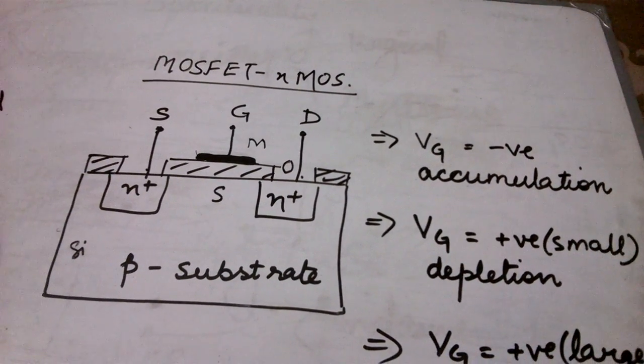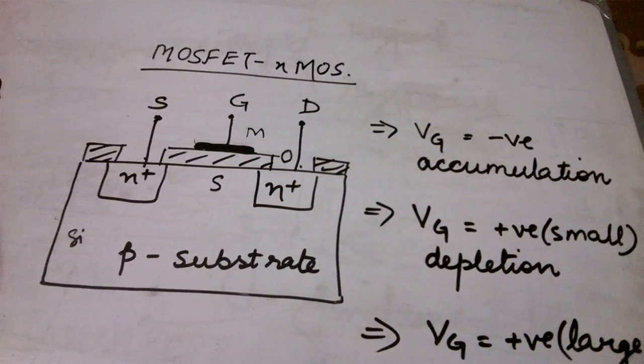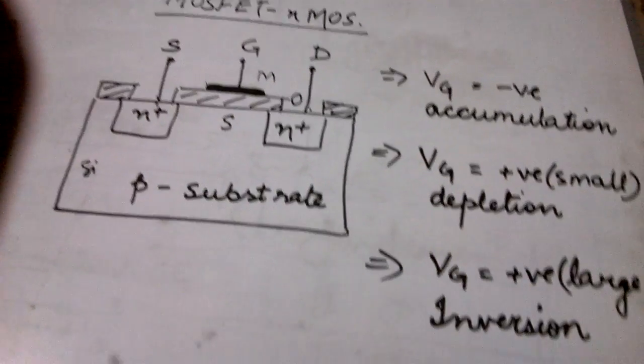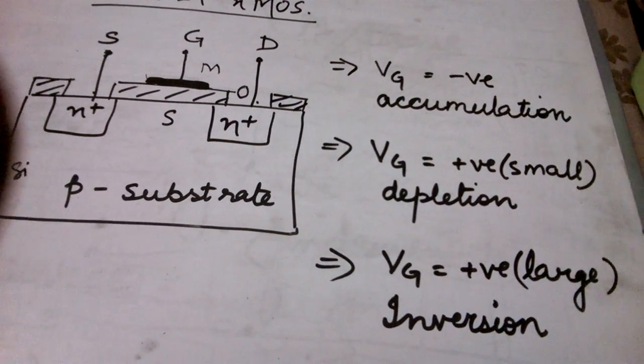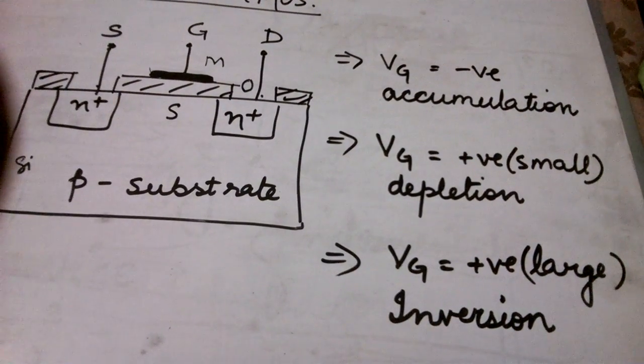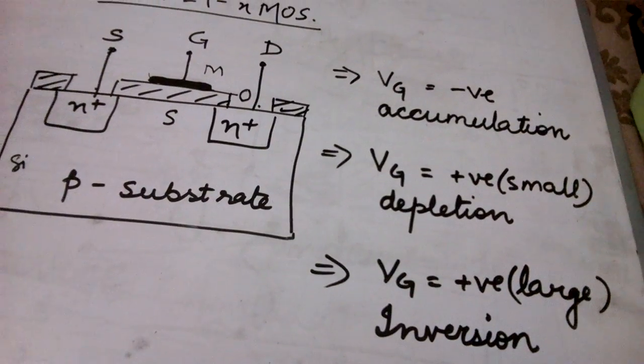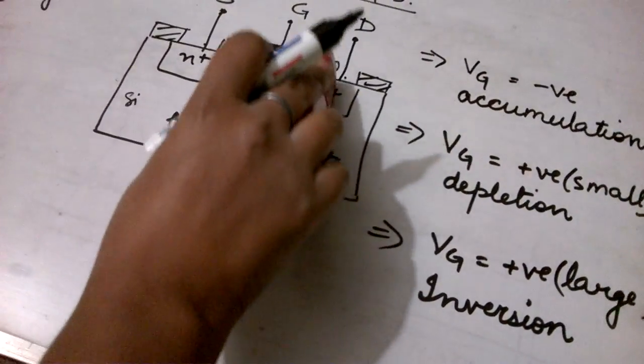So with this we will proceed with the basic working of the NMOS device. Now we can have three modes of operation of any NMOS device as I have written on the right part of the board. The first one is the accumulation, second is depletion and third is inversion. Let's try to understand these three parts of the operation of MOSFET.